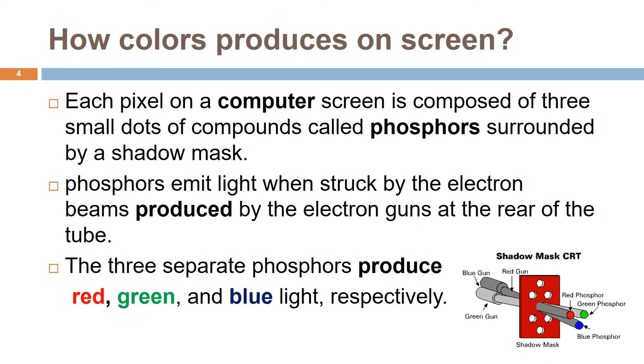Each pixel on a computer screen is composed of three small dots of compounds called phosphors surrounded by a shadow mask. Phosphors emit light when struck by the electron beams produced by the electron guns at the rear of the tube.